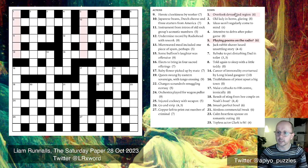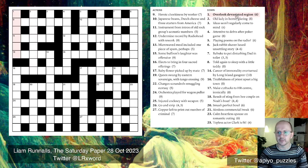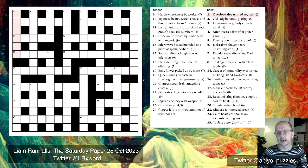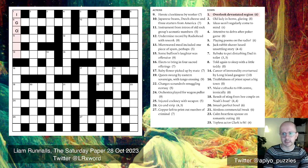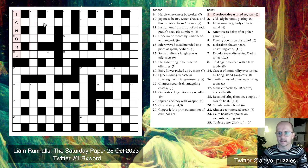We've got a slightly unusual grid in that 1-across doesn't exist, so we'll start with 1-down instead. The clue is 'overlook, devastated region.' This is an anagram clue — 'devastated' is the anagram indicator — and 'region' has six letters, so if we rearrange those letters we get IGNORE, which is another word for overlook.